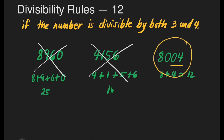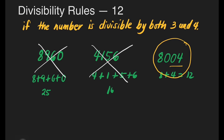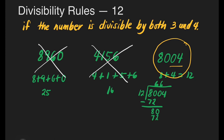I want to know if it is really true. We will divide it using long division. Let's divide 8,004 by 12. How many 12s are there in 80? The answer is 6. 6 times 12 is 72. Let's subtract. 80 minus 72, that's 8. Bring down 0. How many 12s are there in 80? Still the same, that's 6. 6 times 12 is 72. 80 minus 72, that's 8. Bring down 4. How many 12s are there in 84? That's 7. 7 times 12 is 84. 84 minus 84 is 0. We don't have a remainder, making 8,004 divisible by 12. And we're done.